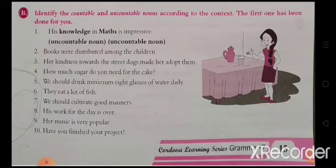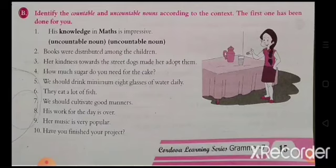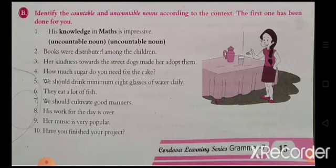Continuing the exercise: 'They eat a lot of fish' — fish can be counted, so it is countable. 'We should cultivate good manners' — manners is uncountable. 'His work for the day is over' — countable. 'Her music is very popular' — uncountable. 'Have you finished your project?' — project is countable.